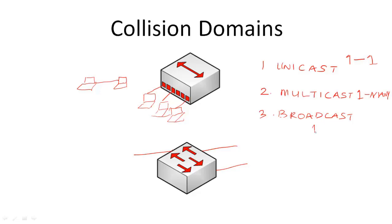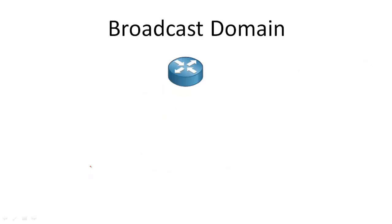For a broadcast, you send from one device to everybody — to all. When you send a broadcast, for instance from a computer connected to a switch, the broadcast message is going to be received by all the ports on that switch. And if that switch is connected to another switch, the broadcast will be received by all ports on both switches. So regardless of the number of switches, we are still on what is called a broadcast domain. A broadcast domain is the part of the network where a broadcast can be received.